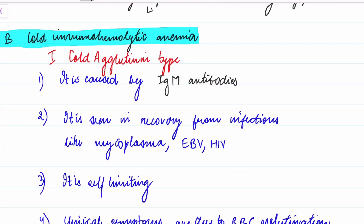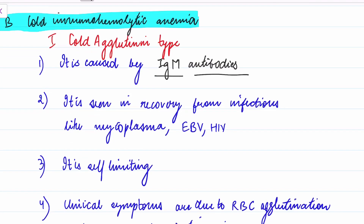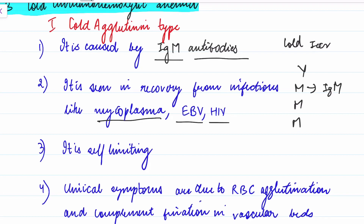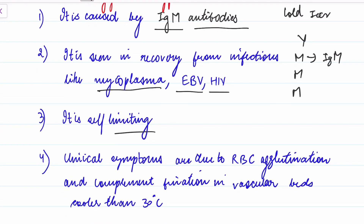Cold immunohemolytic anemia is of two types: cold agglutinin type and cold hemolysin type. Cold agglutinin type is caused by IgM antibodies. It is seen in patients recovering from infections like Mycoplasma, EBV, and HIV. The mnemonic 'cold ice cream is yummy' helps you remember IgM antibodies and Mycoplasma infection.